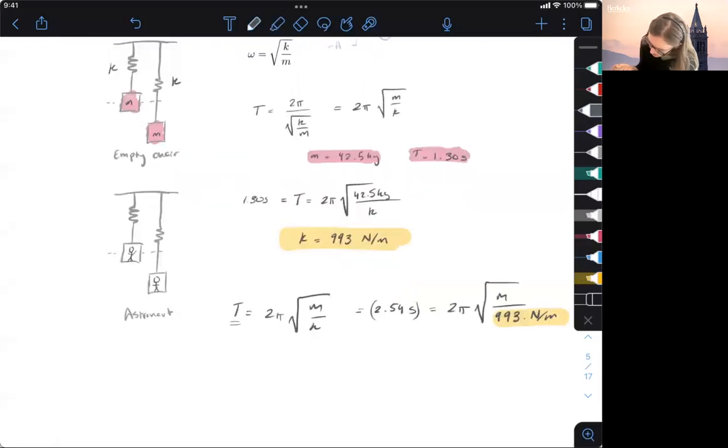So at this point, it's really just algebra. So if we just rearrange to solve for our, we're going to call this M_A for the mass of the astronaut. So our M_A here is going to be, we'll divide one side by 2π, square, and then multiply by 993. So if we kind of just move our things around here, we should get,